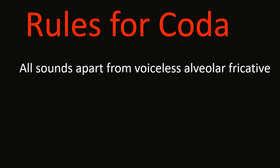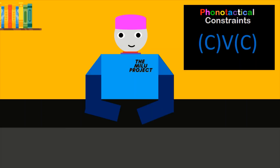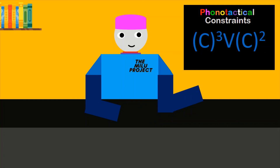This is my syllable structure written out. The brackets represent the fact that the onset and coda of my syllables are optional. If your conlang has consonant clusters, you can write in the extra sounds like this.